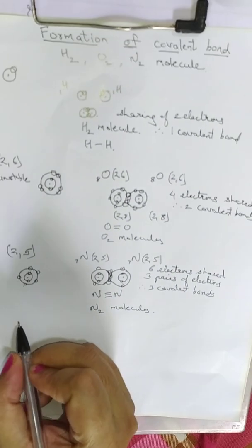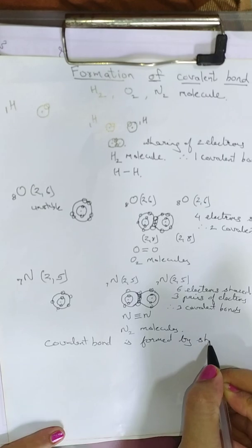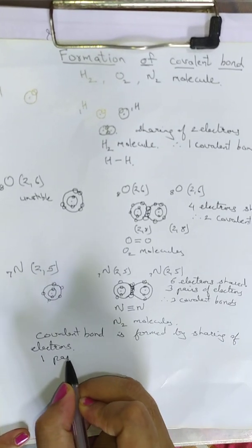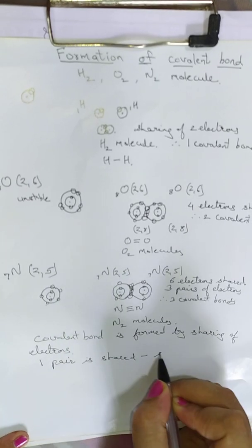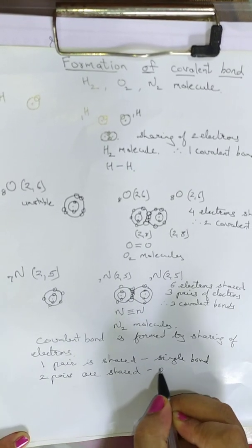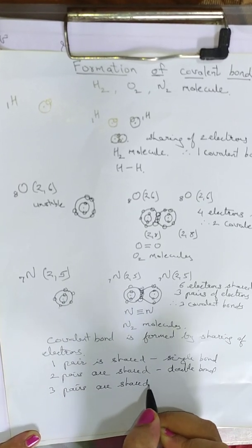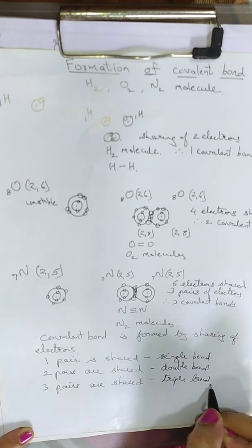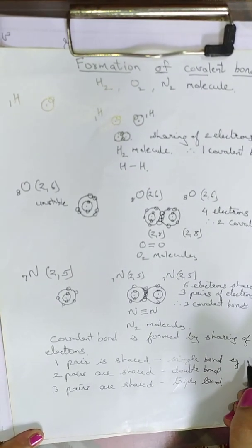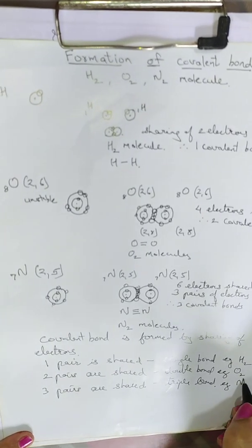Here we have studied the formation of covalent bond. Covalent bond is formed by sharing of electrons. If one pair is shared, it results in a single bond. If two pairs are shared, it results in a double bond. If three pairs are shared, it results in a triple bond. Keep in mind: one pair is 2 electrons, two pairs is 4 electrons, three pairs is 6 electrons. We took the example of hydrogen for single bond, oxygen for double bond, and nitrogen for triple bond.